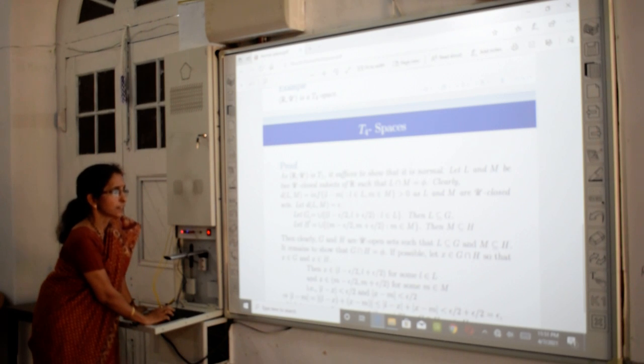Next, G is equal to union of open intervals (l - epsilon/4, l + epsilon/4), where l belongs to L. Here, we are taking open intervals such that each open interval contains a point of set L. And so, from this, we can say that set L is contained in set G.